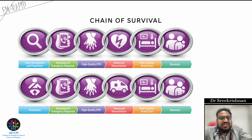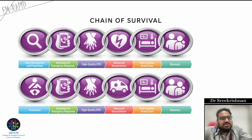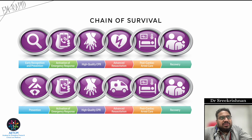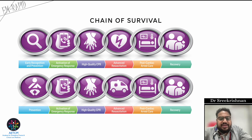So these are the chains of survival for out-of-hospital cardiac arrest. Remember, when we talk about chain of survival, we have two components: in-hospital chain of survival and pre-hospital or out-of-hospital chain of survival for cardiac arrest.